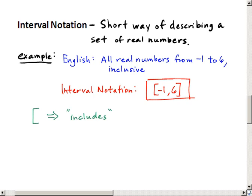So essentially the closed bracket, or the squared off bracket, basically translates to the word includes, and the rounded off parenthesis translates to does not include.